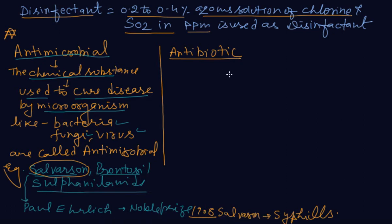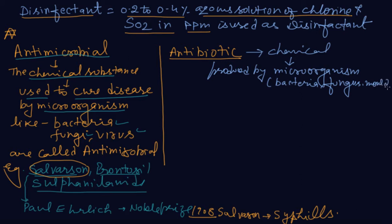What is antibiotic? The chemical substances which are produced by microorganisms and used to kill harmful microorganisms are called antibiotics. Antibiotics are chemicals which are produced by microorganisms like bacteria, fungus, and mold, and these are used to kill harmful bacteria.